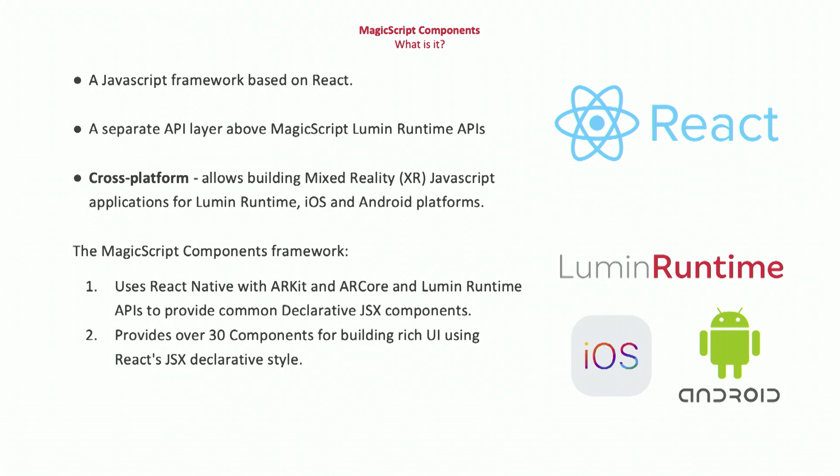Right now we've got a little over 30 different components that you can make use of. These include things such as buttons, 3D models, images, various layouts, as well as drop-downs, progress bars — the whole UI kit for developing rich UI.